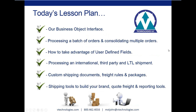I'm going to go over some features of Starship — not really advanced features, but a deeper dive into some of the things you can do. I'll review the business object interface, which is a new interface where you can do all your shipping right from the Starship software without needing access to Sage. Shippers don't have to go into Sage and shipping data entry — they can just ship from the business object interface. I'll also cover how to process a batch of orders and consolidate multiple orders into one shipment.